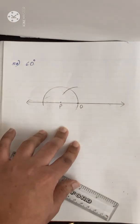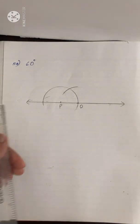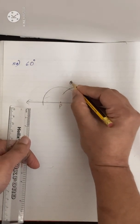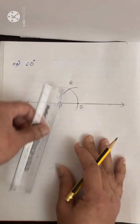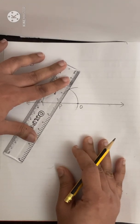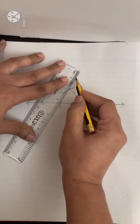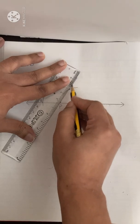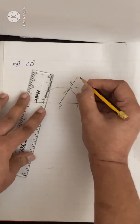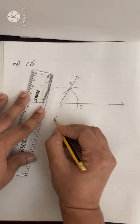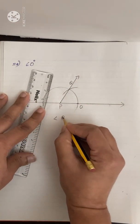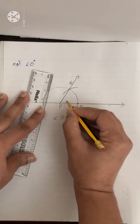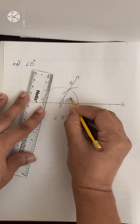Draw a small arc and mark this point as Q. Now join P and Q. Therefore, angle QPO equals 60 degrees.